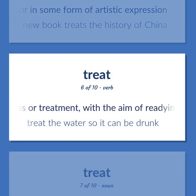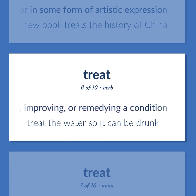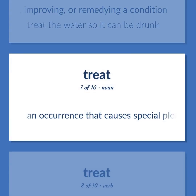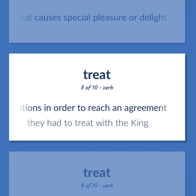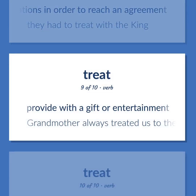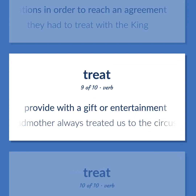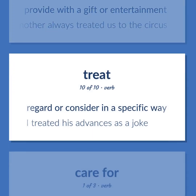The new book treats the history of China. Subject to a process or treatment with the aim of readying for some purpose, improving, or remedying a condition: Treat the water so it can be drunk. An occurrence that causes special pleasure or delight. Engage in negotiations in order to reach an agreement: They had to treat with the king. Provide with a gift or entertainment: Grandmother always treated us to the circus. Regard or consider in a specific way: I treated his advances as a joke.